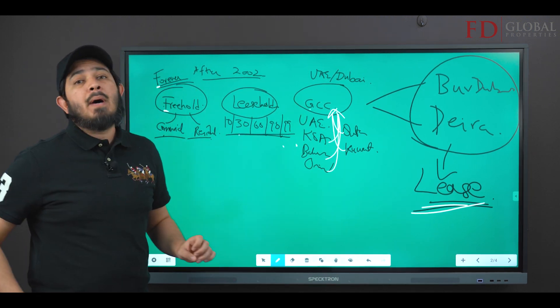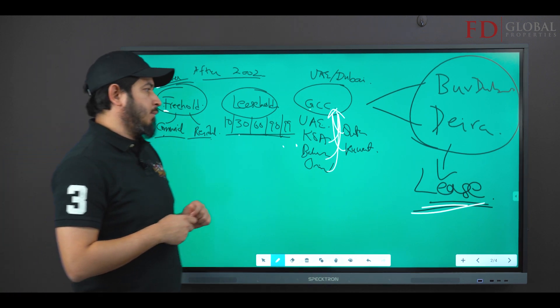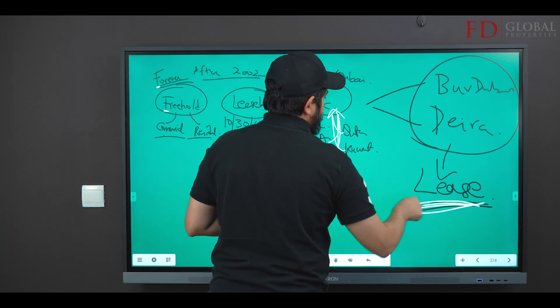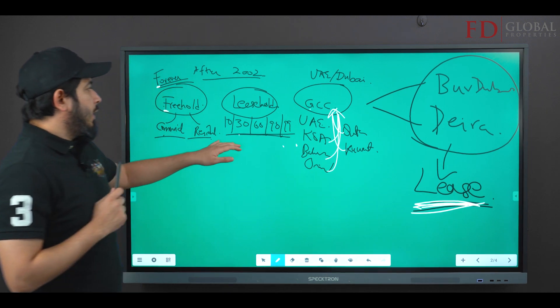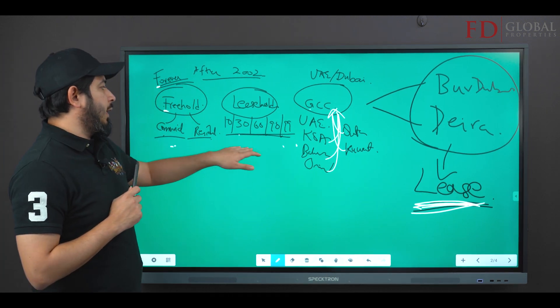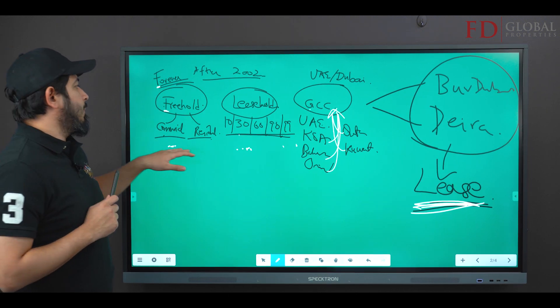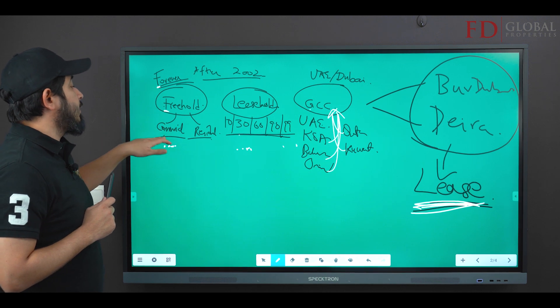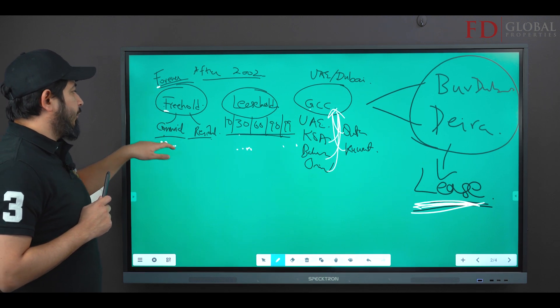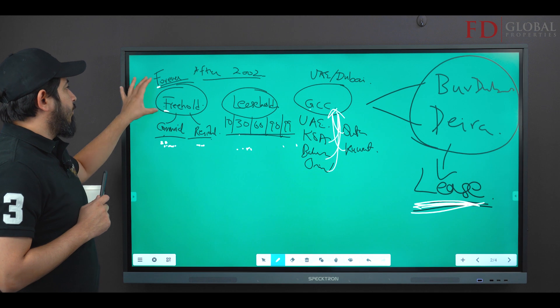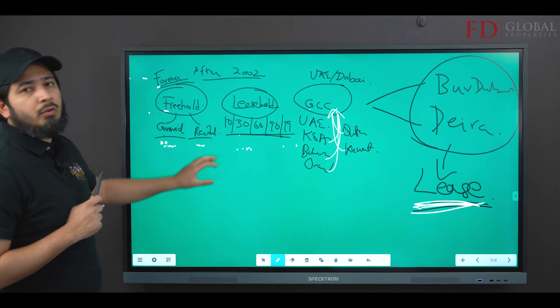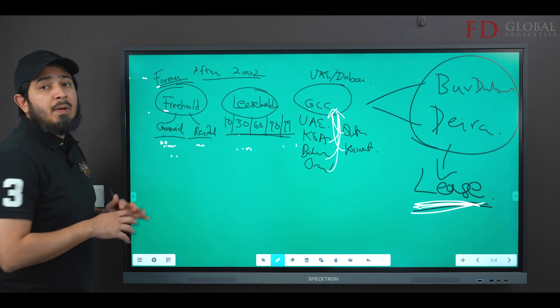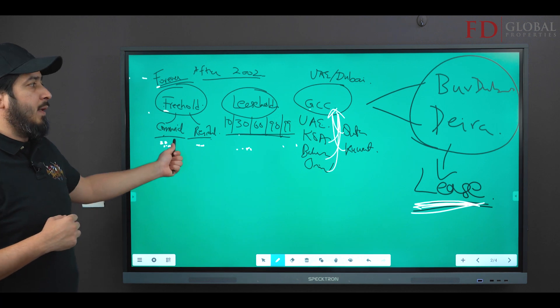Whereas in freehold and in leasehold areas, you can actually purchase the land or you can purchase the commercial land, office or residential, for forever title or leasehold. This is the place where you can today actually make that purchase.